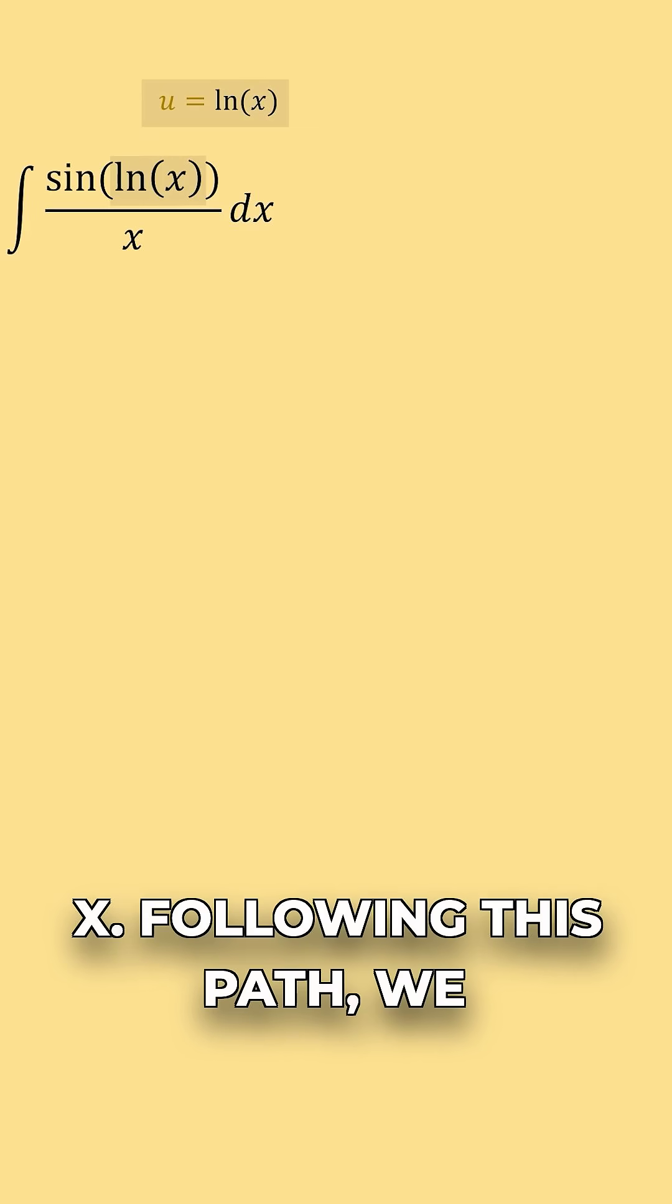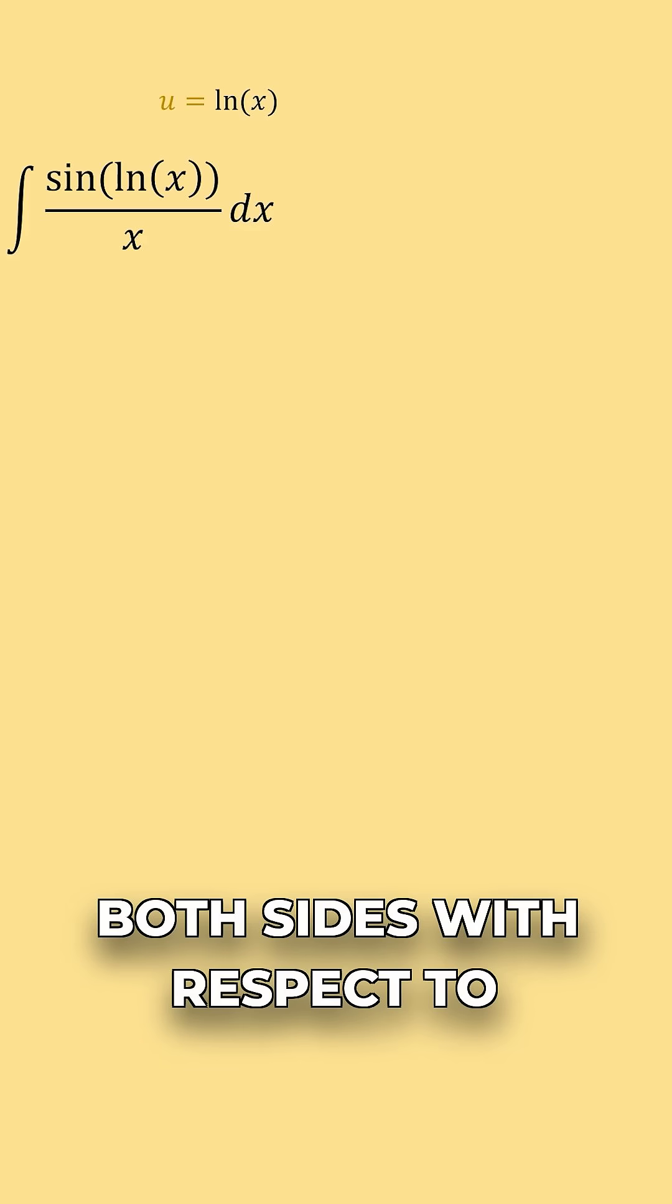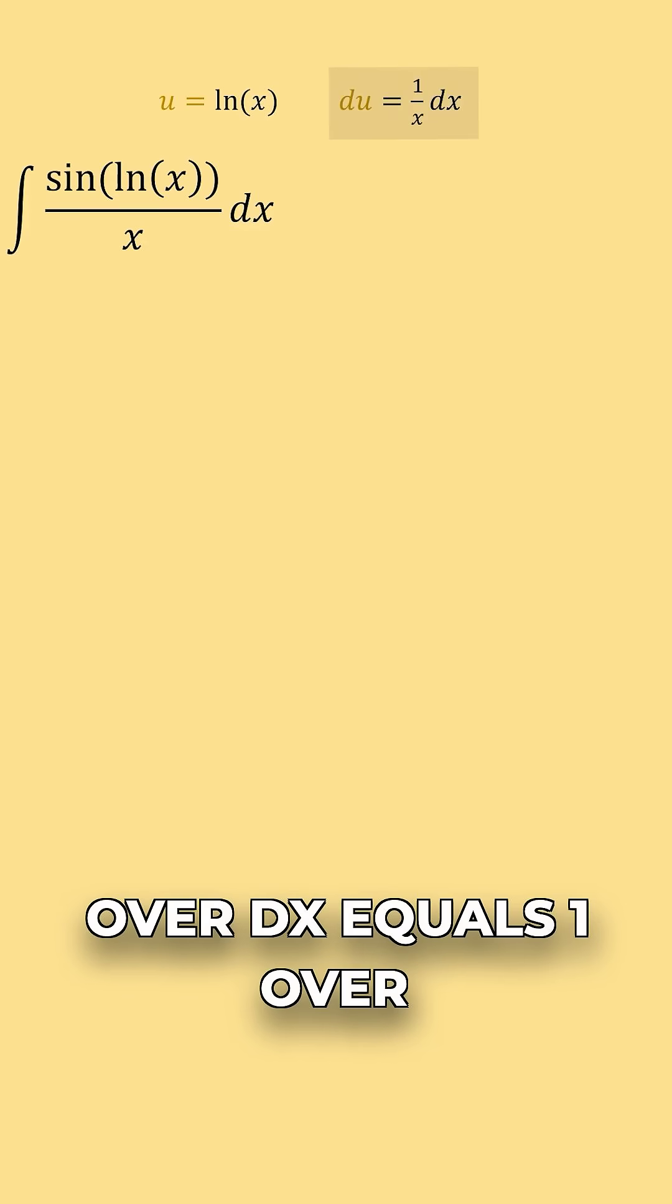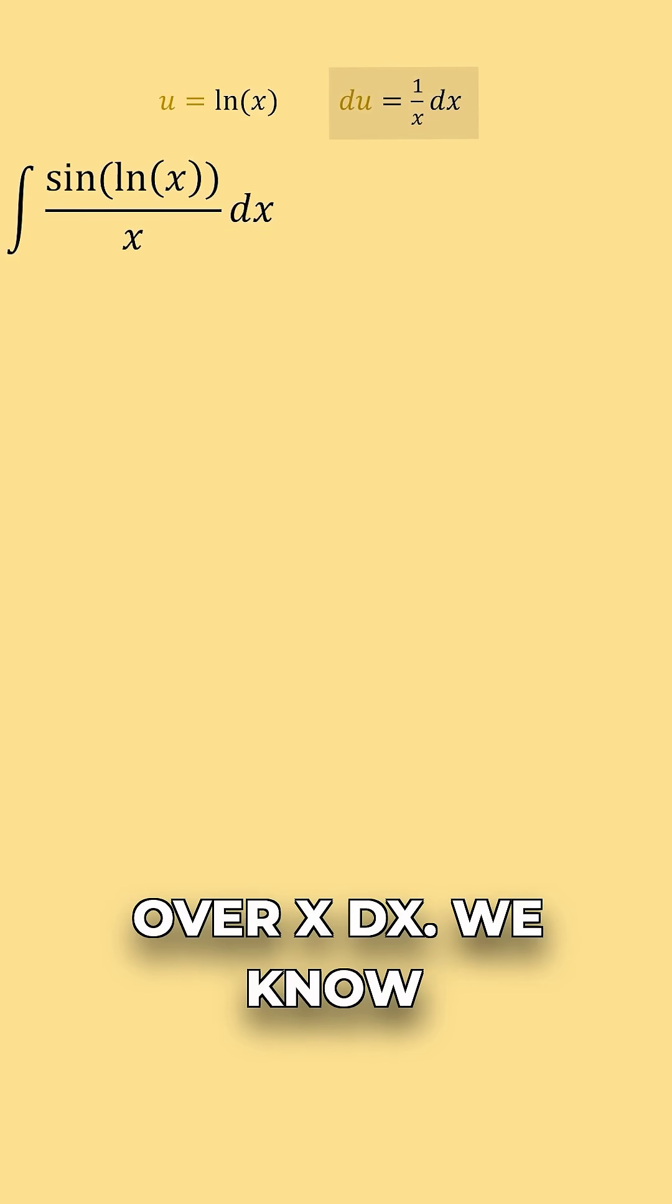Let's let u equal natural log of x. Following this path, we then take the derivative of both sides with respect to x. So we get du over dx equals 1 over x. We move the dx to the right side, so we get du equals 1 over x dx.